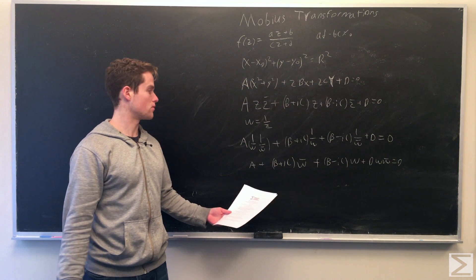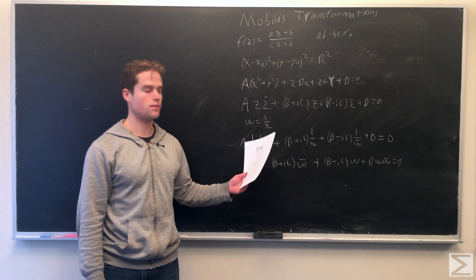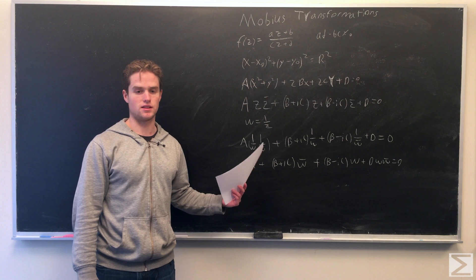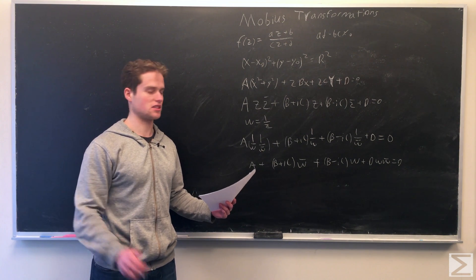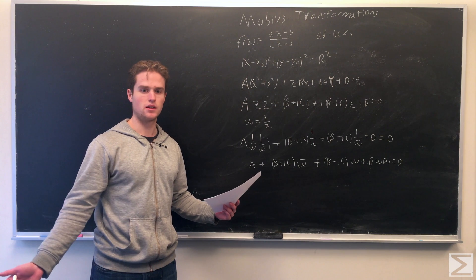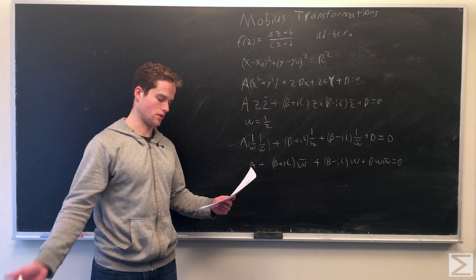And so now we can say the transformation sending z to 1 over z preserves circles and lines. So it sends circles and lines into something else as a circle or a line.